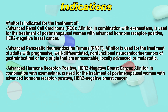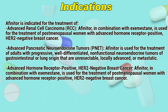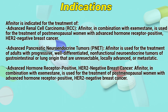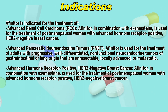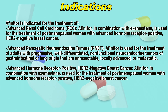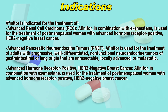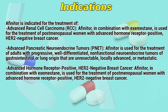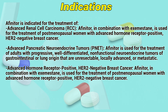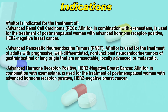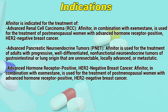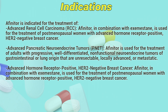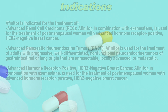Indications: Afinitor is indicated for the treatment of advanced renal cell carcinoma. Afinitor in combination with exemestane is used for the treatment of postmenopausal women with advanced hormone receptor-positive, HER2-negative breast cancer. It is also indicated for advanced pancreatic neuroendocrine tumors, and for adults with progressive well-differentiated non-functional neuroendocrine tumors of gastrointestinal or lung origin that are unresectable, locally advanced, or metastatic.